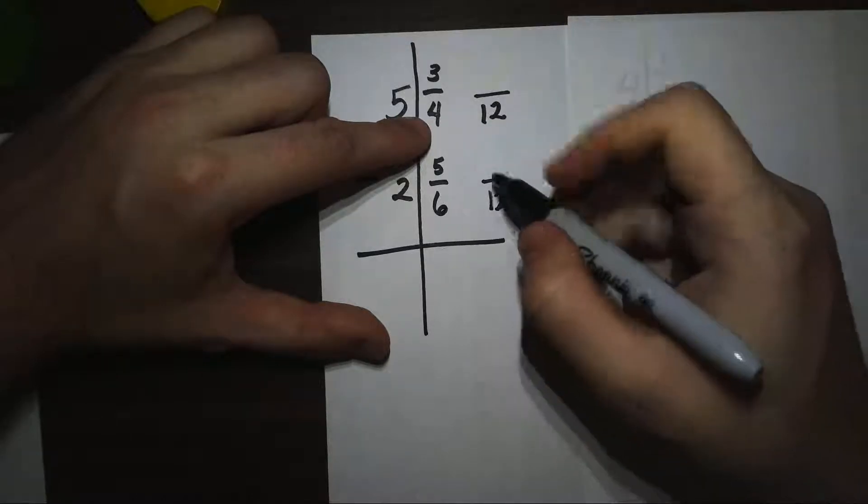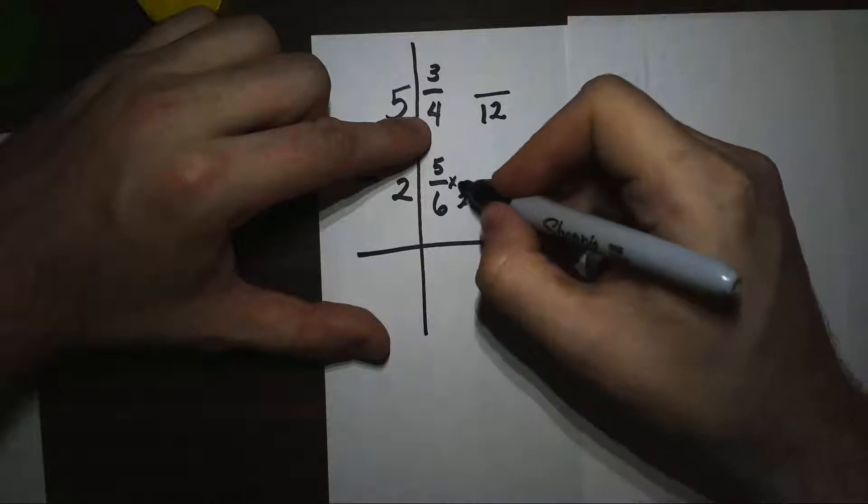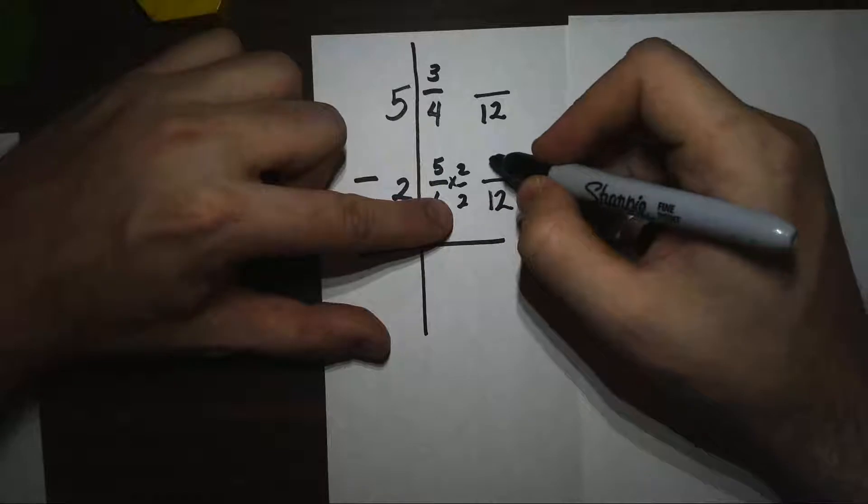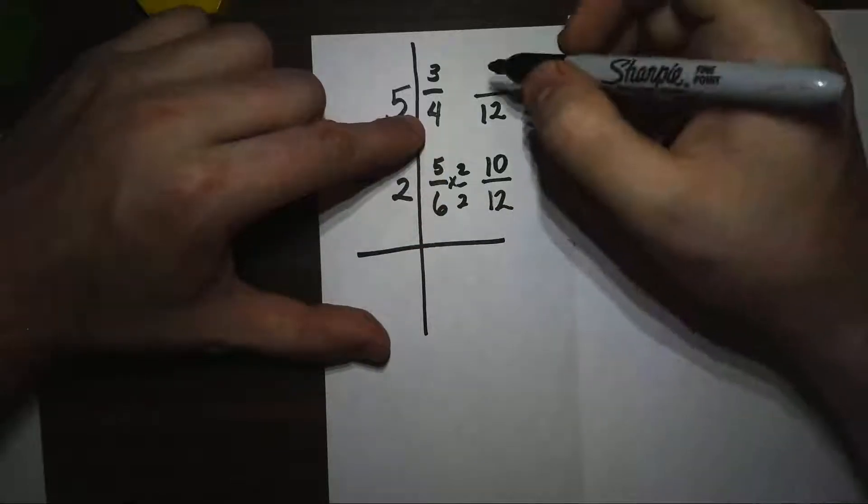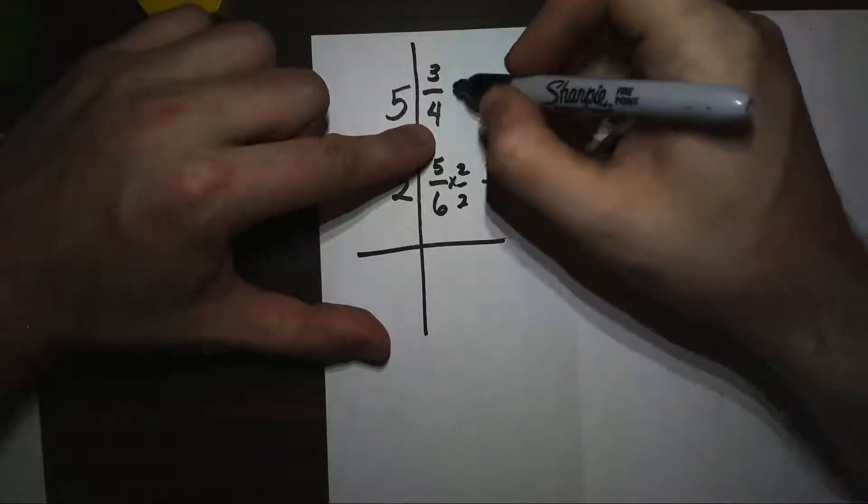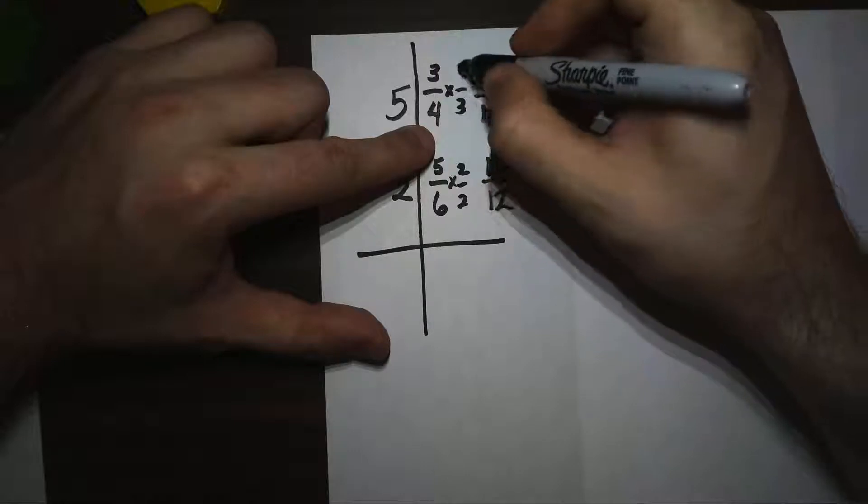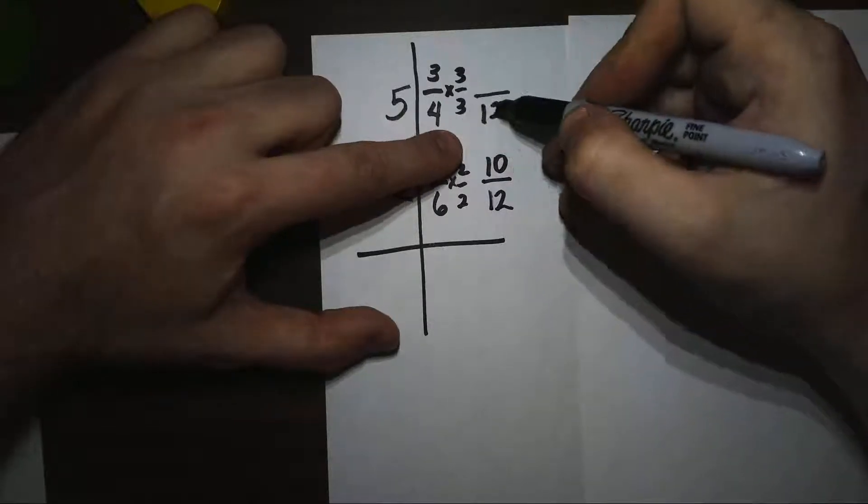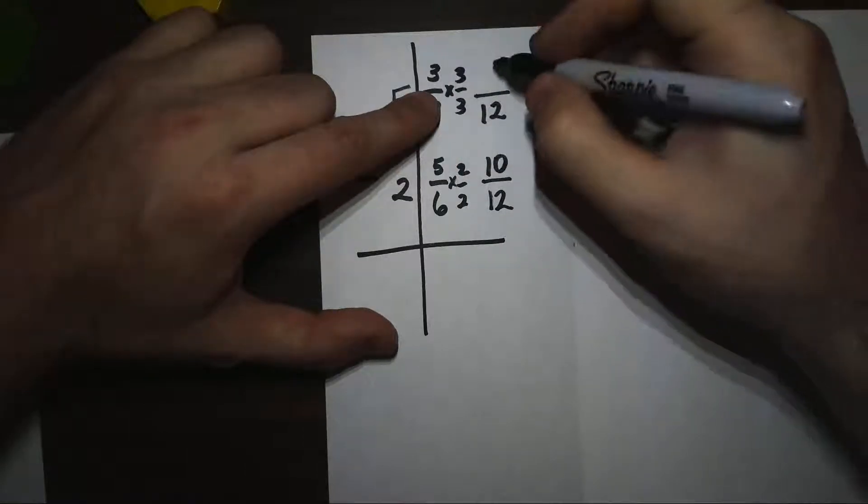I'm going to ask myself how many 6s go into 12, and there are 2. So I'm going to multiply this number by 2/2, or 1 whole, so I'm not changing the number, I'm just finding an equivalent fraction. And 4 times 3 equals 12, so I'm going to do the same thing over here. Again, I'm multiplying by 1 whole, so I'm not changing my fraction. 3 times 3 is 9.